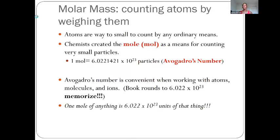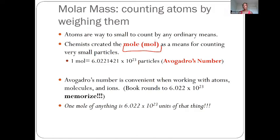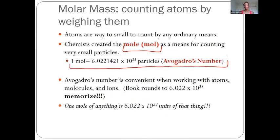In chemistry we're going to use that same mentality to help us count our atoms and other types of small particles. The word we're going to use is the word mole — a mole of something. Every time you hear that you have a mole of something, if we are counting it, that means we have 6.022 times 10 to the 23rd particles of whatever we're talking about. That number is known as Avogadro's number, and you're going to want to memorize that.